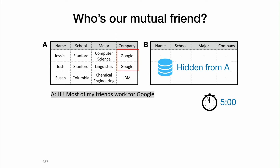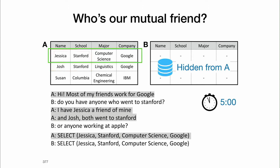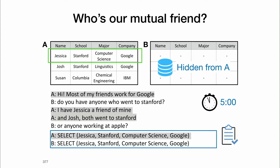A starts with: 'Hi, most of my friends work for Google.' And B replies, 'Do you have any friend who went to Stanford? I have Jessica and Josh, both went to Stanford.' Or 'anyone working at Apple' — you might notice this is a crosstalk, not directly responding to the previous utterance. And at this point, once they figure out the mutual friend, they can select that friend. When they select the two rows with same attributes, the task is completed.